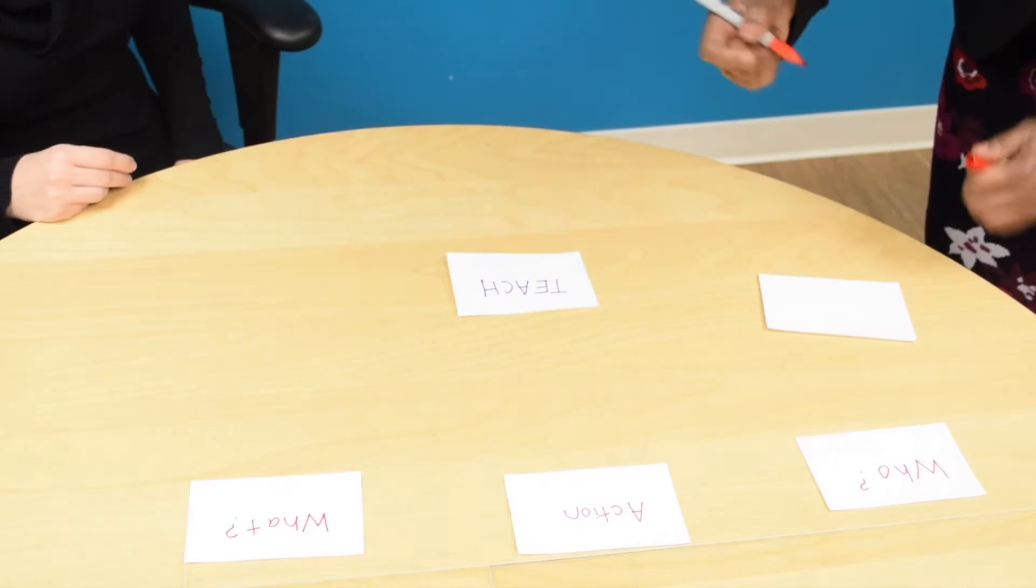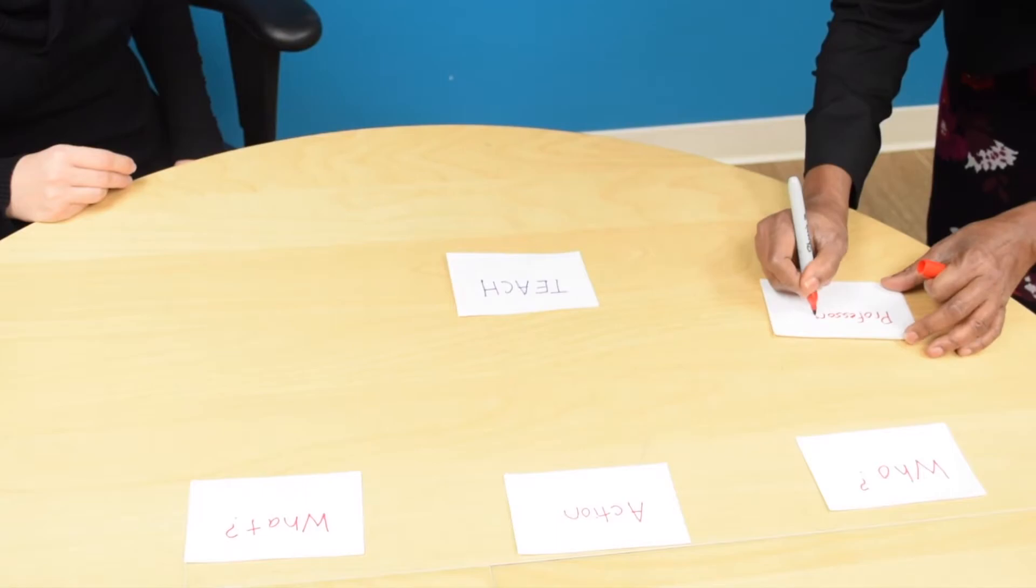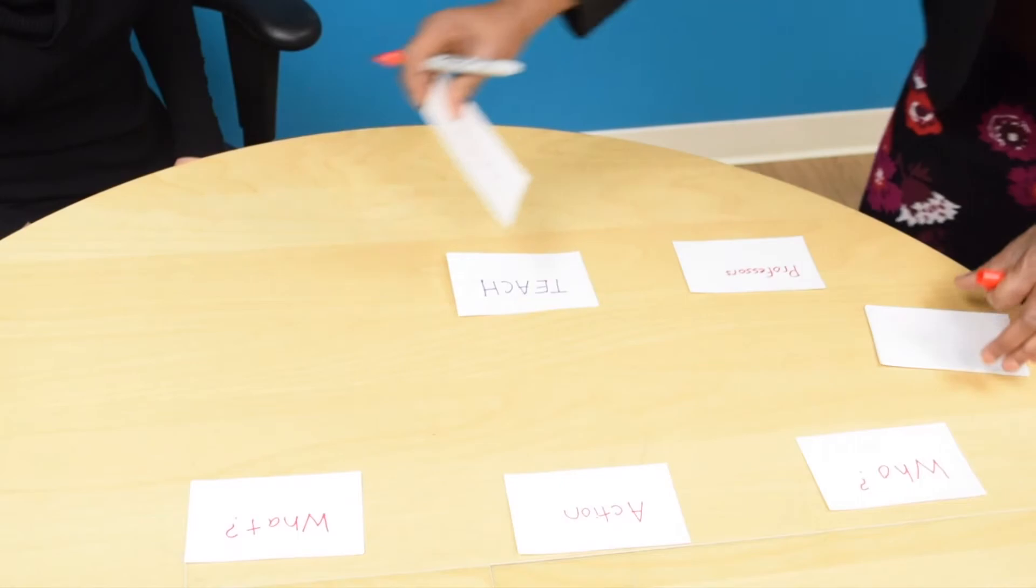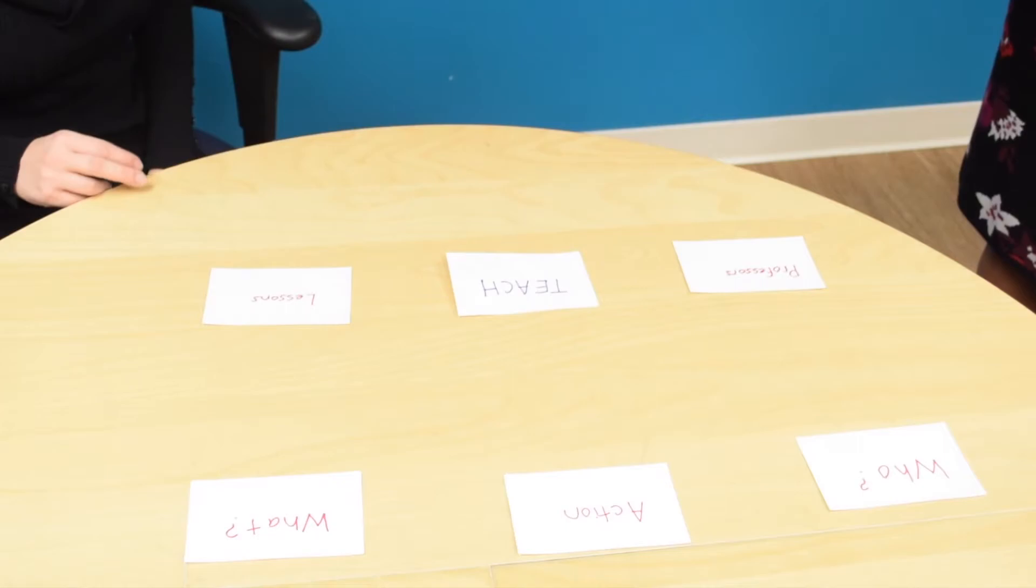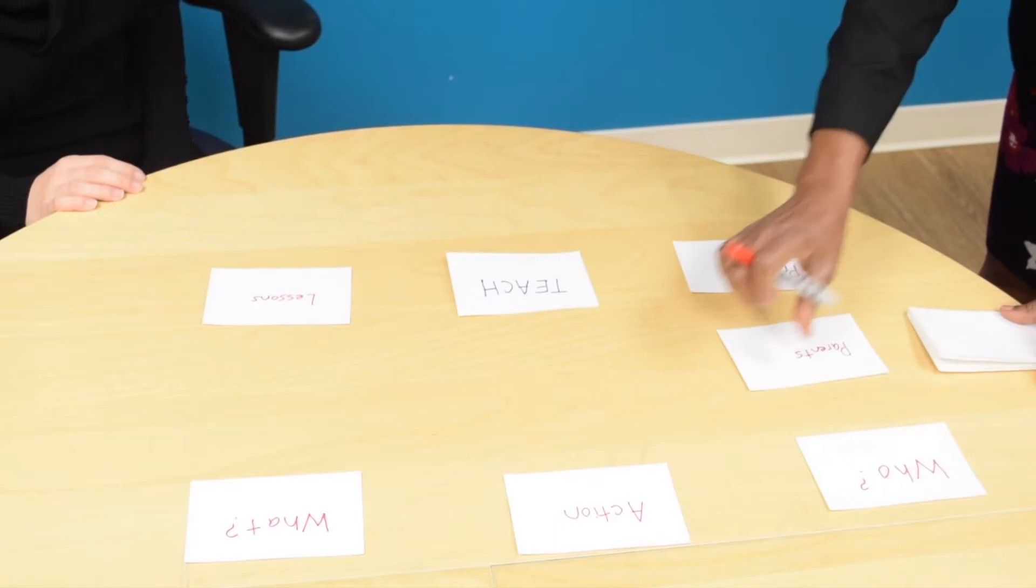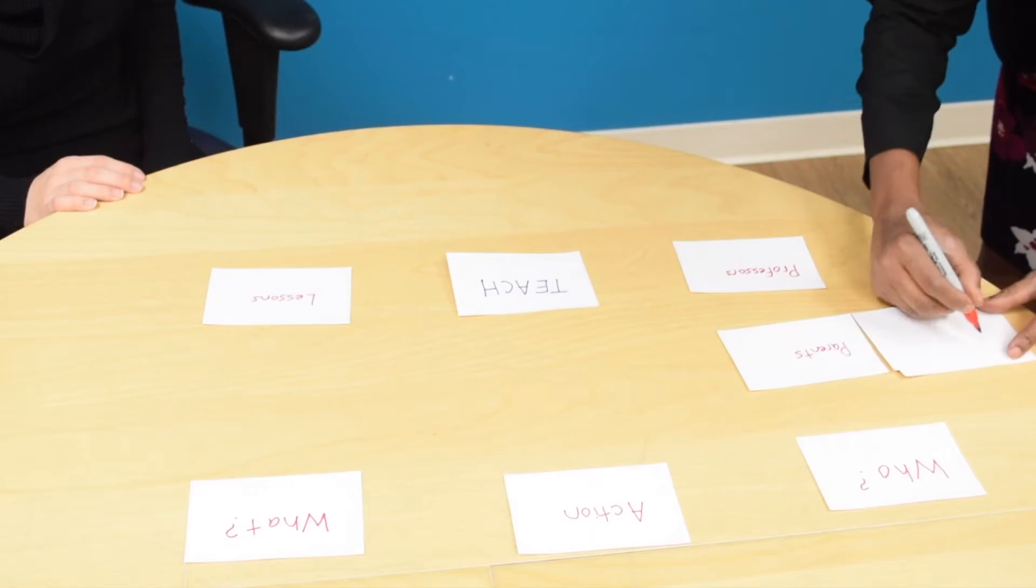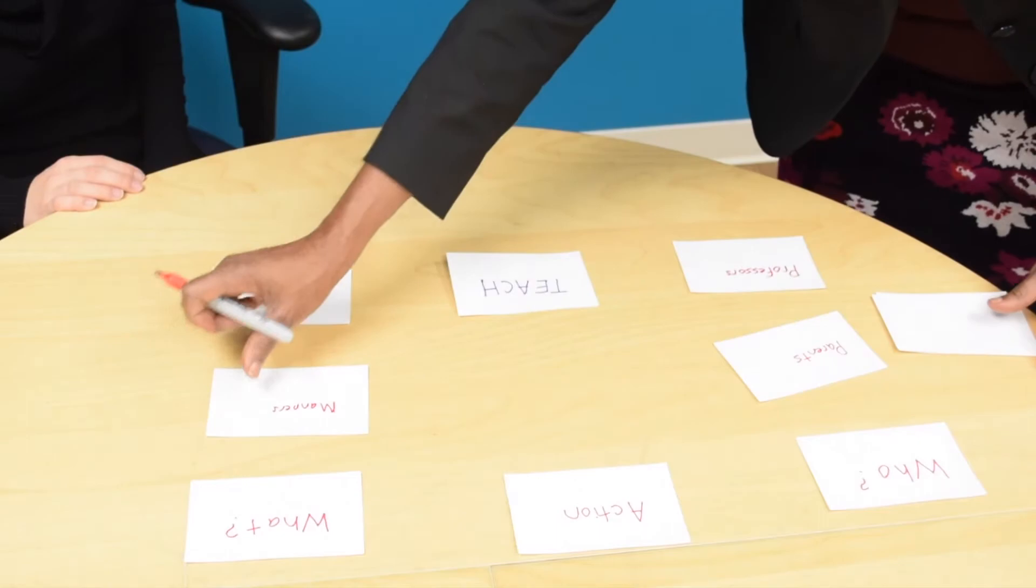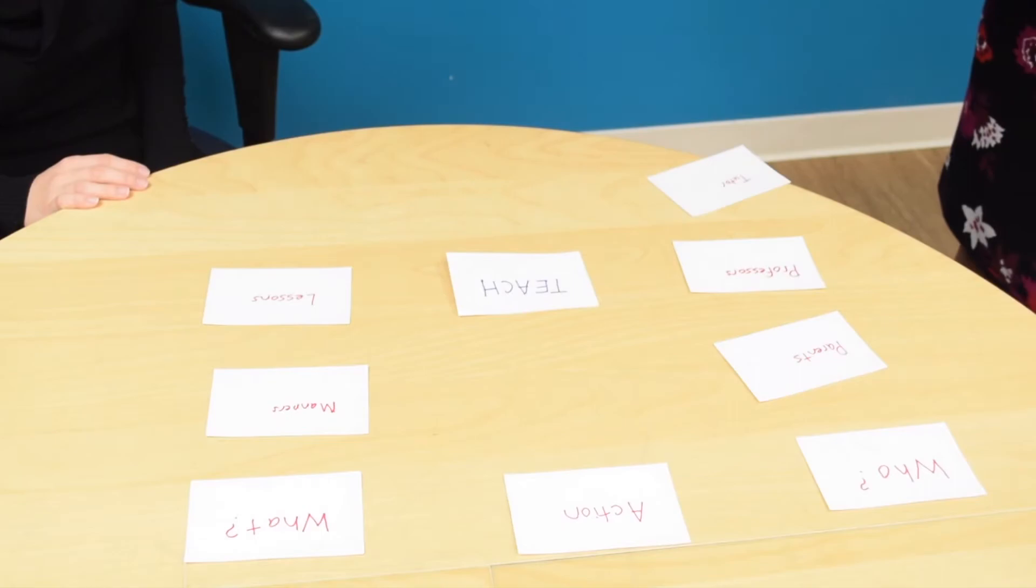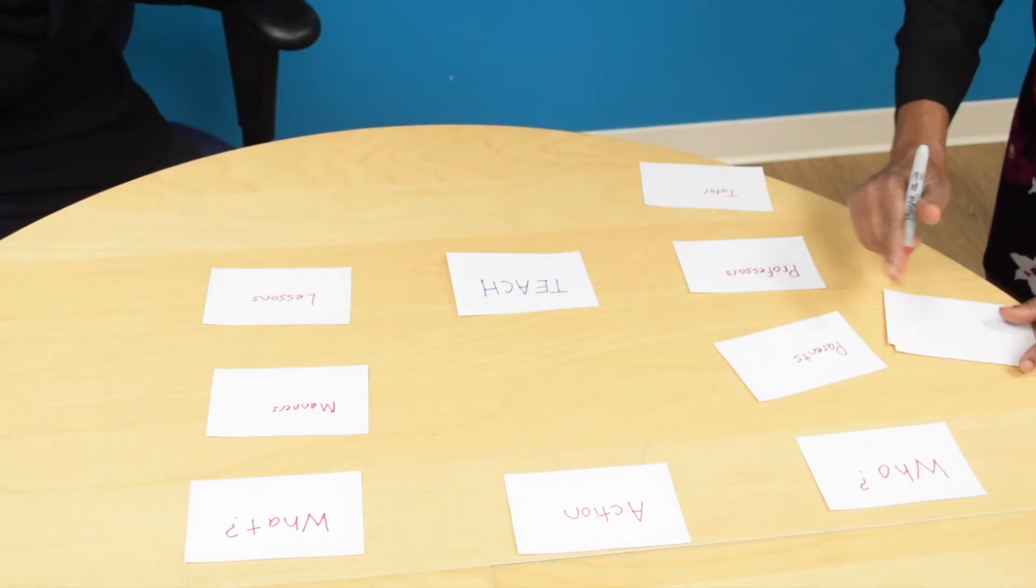What the patient would do is identify three agents. I'd like you to tell me who teaches. Professors. What do professors teach? Lessons. I like the way you answered that question very quickly. Professors teach lessons. Who else teaches? Another example. Parents. And what do parents teach? Manners. They definitely teach manners. Tell me one more - who else teaches? Tutors. And what do they teach? Students. Good answer.